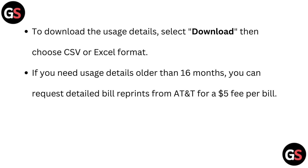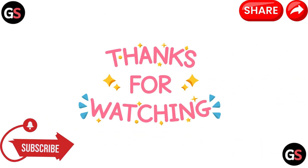To download the usage details, select 'Download' then choose CSV or Excel format. If you need usage details older than 16 months, you can request detailed bill reprints from AT&T for $1.05 per bill. Thanks for watching this video.